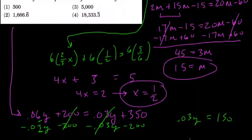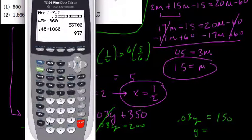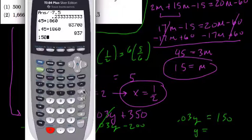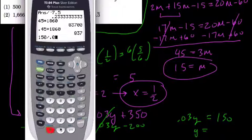Alright, so sorry, what does y equal? Well, y equals 150 divided by 0.03.